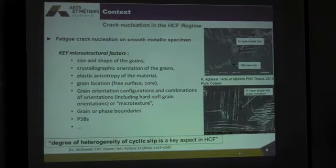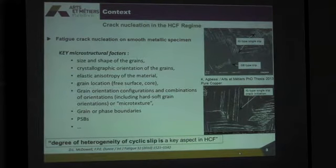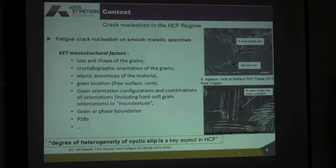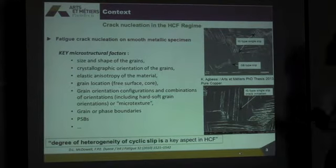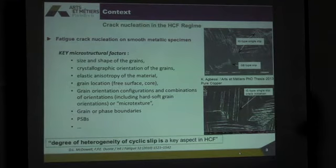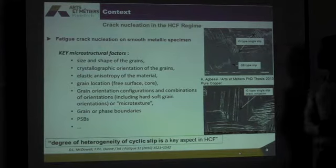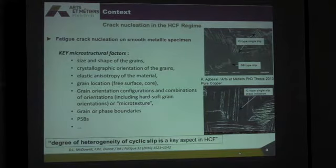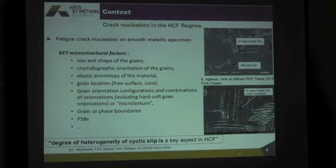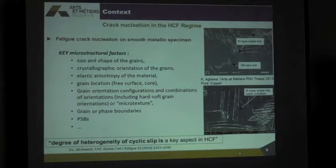Now if we turn to carefully polished specimens made of single-phase metal, the crack initiates due to many microstructural factors. It has been proved by several authors that the size and shape of the grains have an effect. The crystallographic orientation of the grain has a strong effect. The degree of anisotropy of the crystal, the grain location — whether it is at the free surface or in the bulk — the microtexture, which we will talk about in this talk.